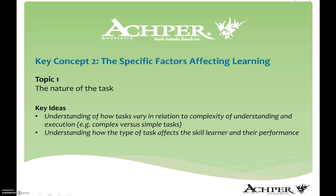Moving into the second key concept for skill acquisition, which is our fifth topic. This looks at specific factors affecting learning, covering the first three key ideas: the nature of the task, practice and feedback, and environmental factors.